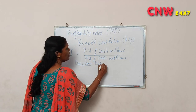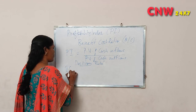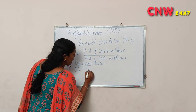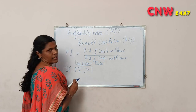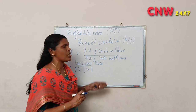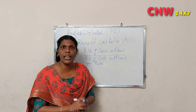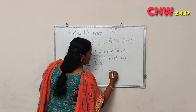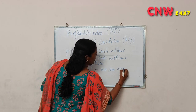Decision rule: if the profitability index is greater than 1, we can accept the project. If the profitability index is equal to 1, the present value of cash inflows equals cash outflows — we are indifferent. If the profitability index is less than 1, we reject the project.